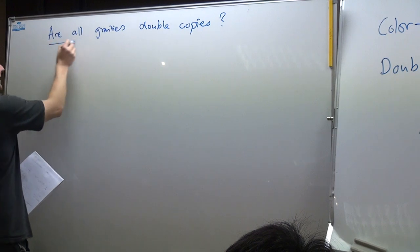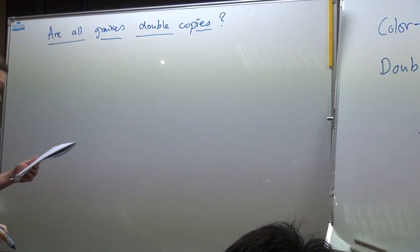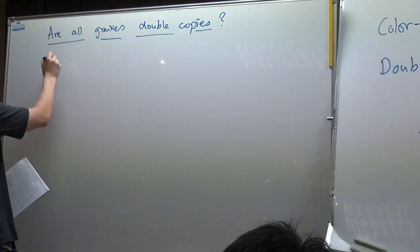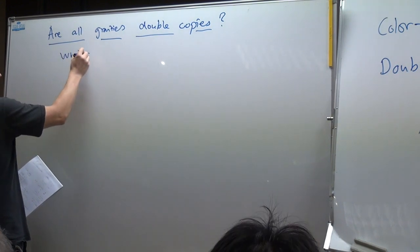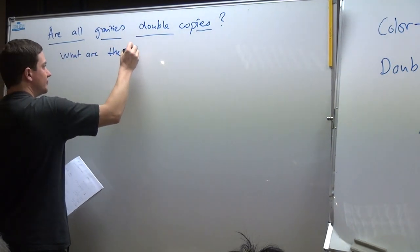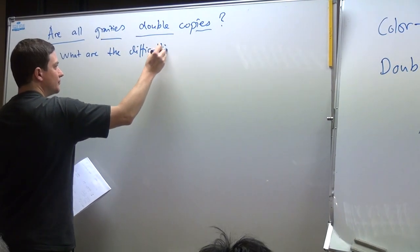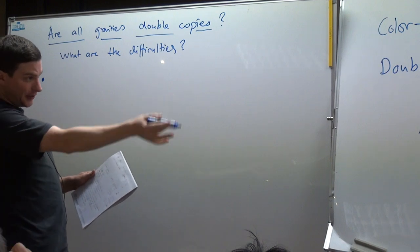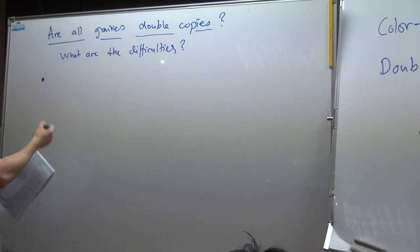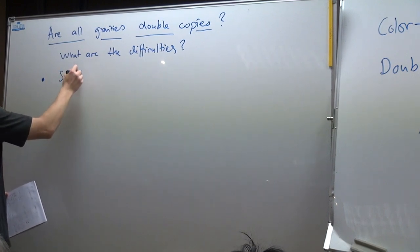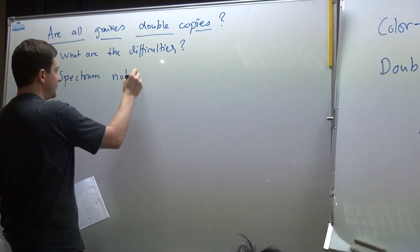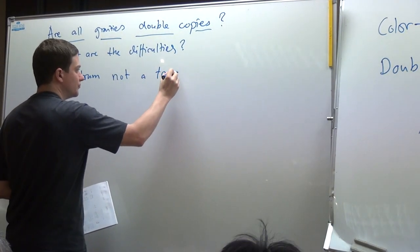I'm not going to answer that question, but we can think about what sort of difficulties will arise in trying to answer it. The first difficulty is that there are many theories, and most theories are not truncations of N=8. All of these theories are truncations of N=8, but most theories are not — the spectrum is in general not a truncation.